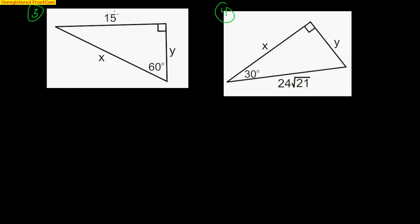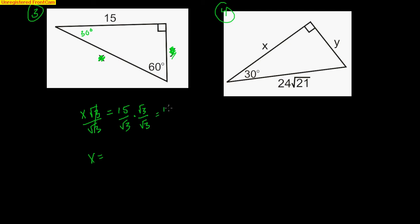In example 3, the long leg is 15. Remember, the long leg is X√3. So X√3 = 15, meaning I need to solve for X, the short side across from 30 degrees. Divide both sides by √3, giving X = 15/√3. Rationalizing the denominator — multiply top and bottom by √3 — gives 15√3 / 3, and 15 divided by 3 is 5. So the short leg is 5√3, and the hypotenuse is double that: 2 × 5√3 = 10√3.